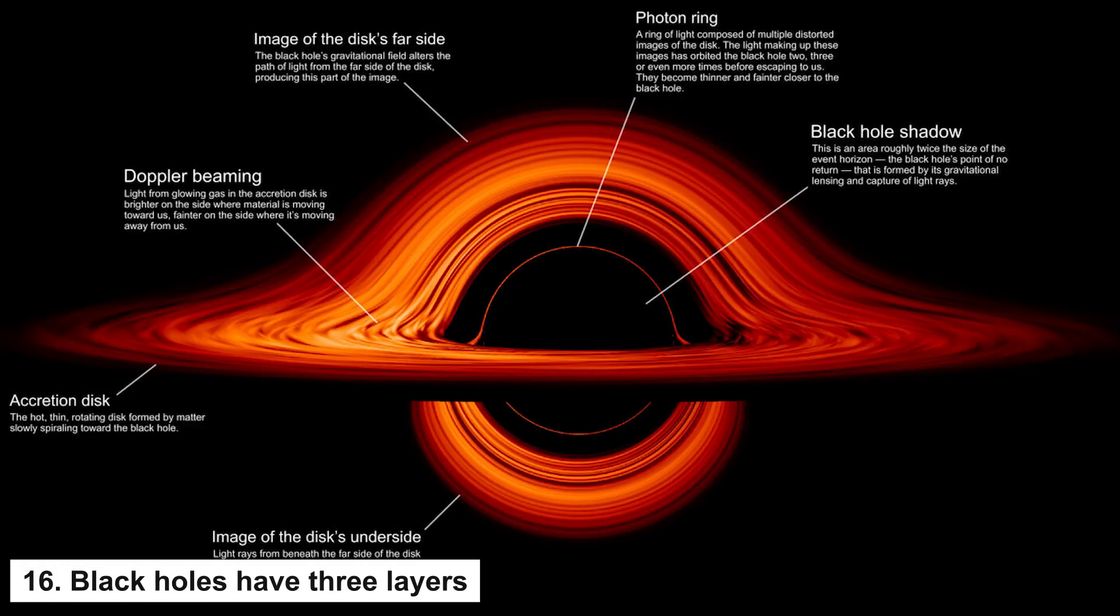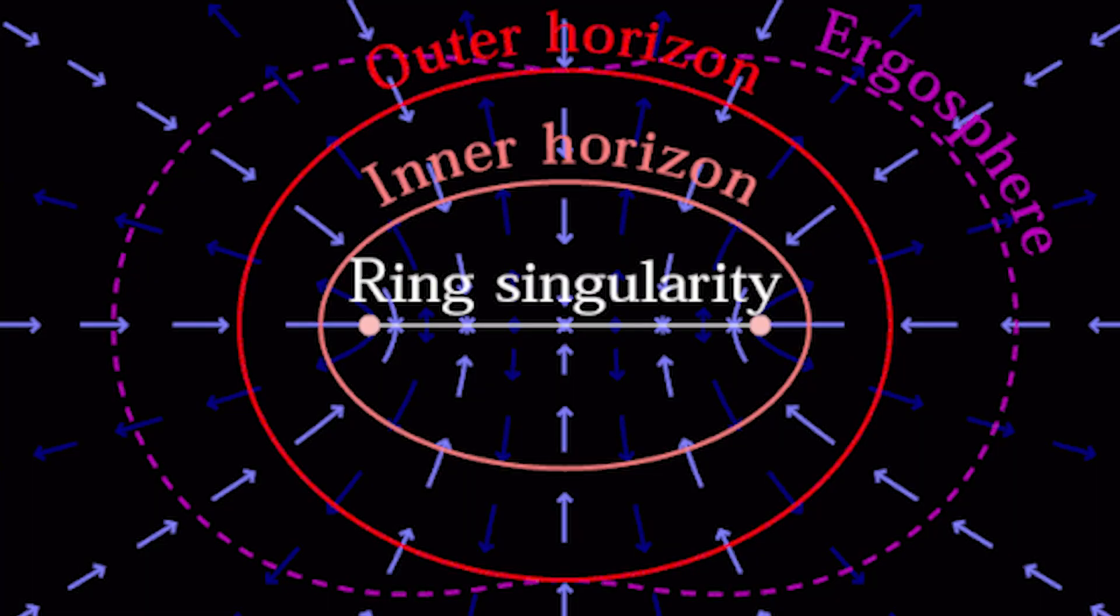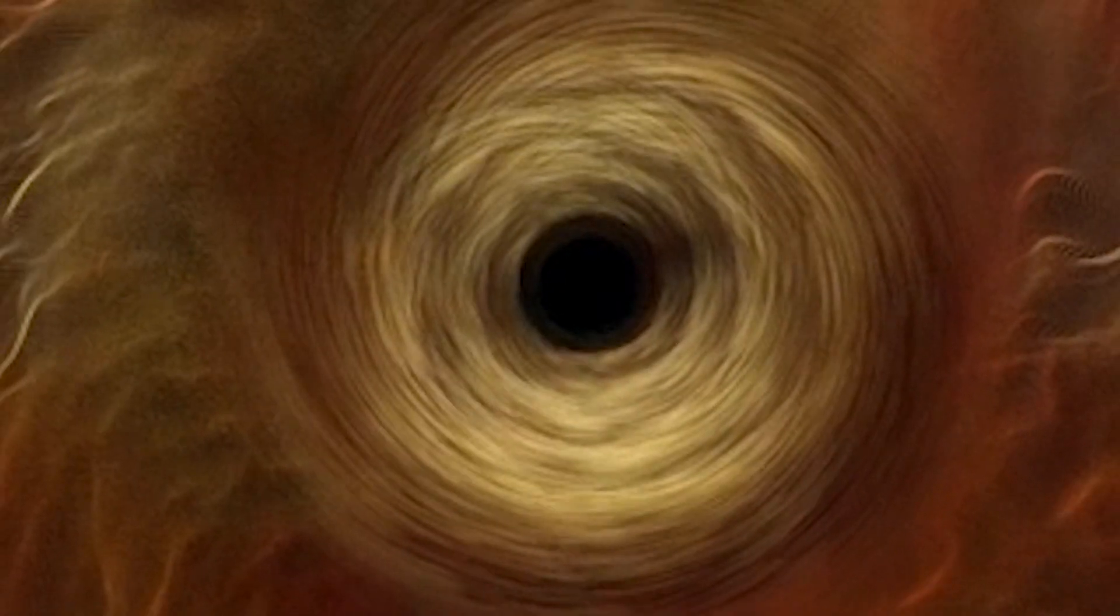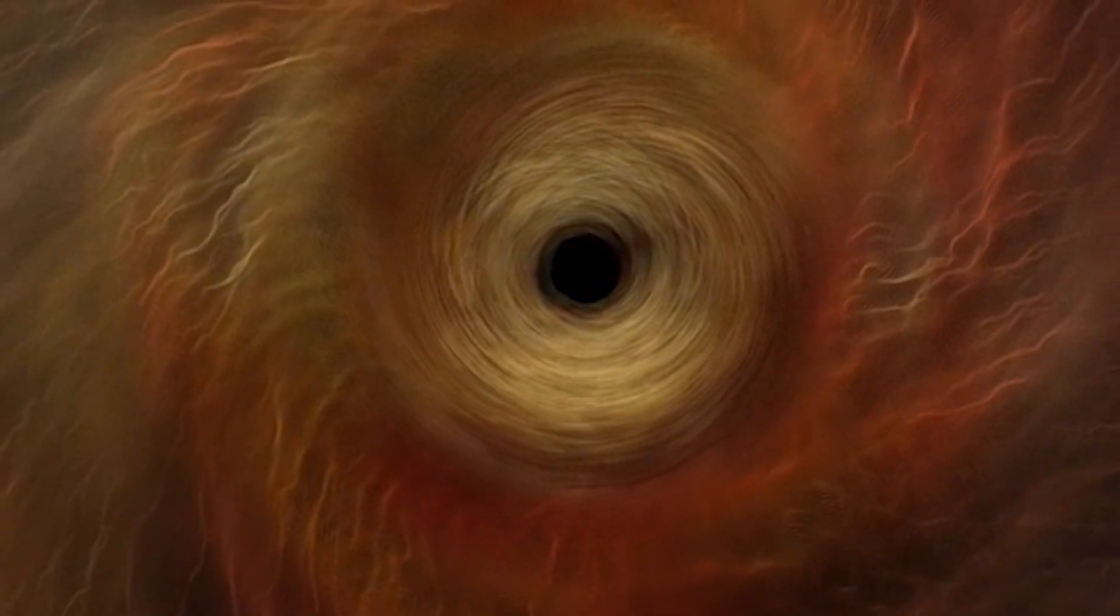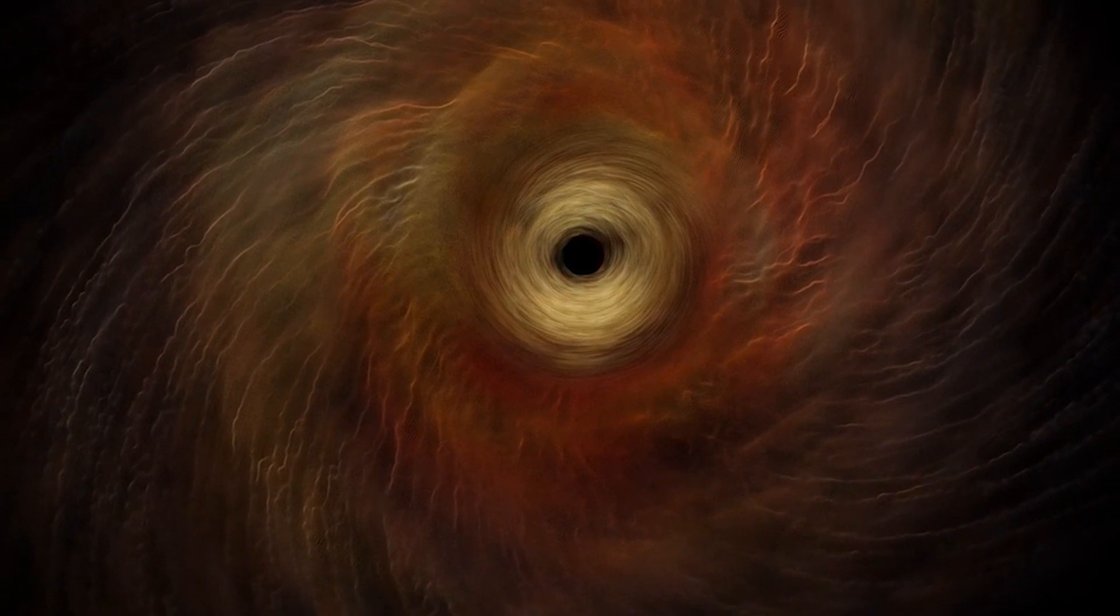Number 16: Black holes have three layers. If we were to take apart a black hole, we would see that it has three layers: outer layer, inner layer, and singularity. The outer layer is called the outer event horizon, which is the boundary around the mouth of the black hole. Near this region, the gravitational force is not strong and objects can still escape. The inner layer is called the inner event horizon. Here the gravitational force is so strong that even light cannot escape. When an object reaches this layer, it begins to fall towards the center of the black hole. The singularity, the center of a black hole, has an even greater gravity.